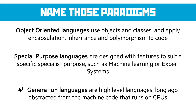Then we've got special purpose languages, which are mainly designed with feature sets to suit a specific specialist purpose. Machine learning or expert systems are good examples of this, where the feature set needed to build the program is very specific and the features probably wouldn't be that useful in other methods.